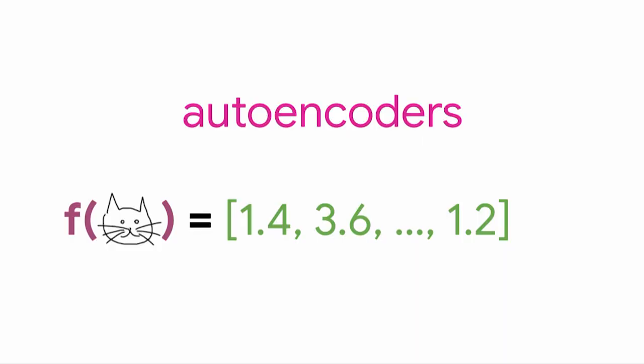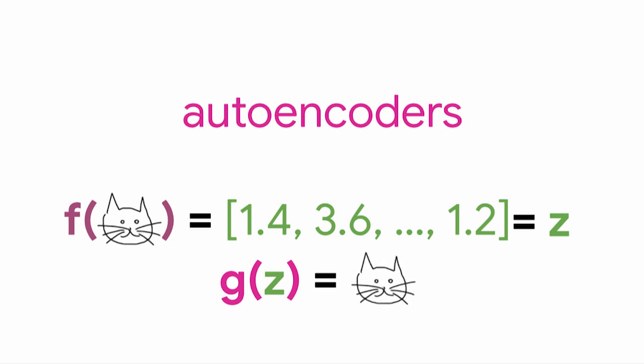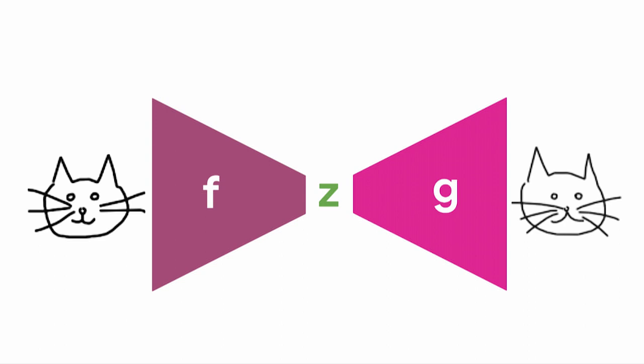I want to move on from language models and talk about another type of generative model called an autoencoder. The idea is now instead of having one model, one function, we have two functions. The first we'll call F, which is our encoder function — it takes in a sketch of a cat face and turns that into just a sequence of numbers, a vector we typically denote Z. But now we have a second function G, which is our decoder, and it takes that vector of numbers and tries to turn that back into the cat face.